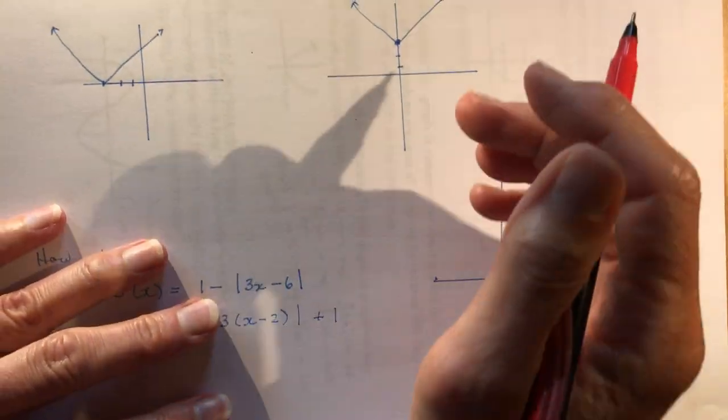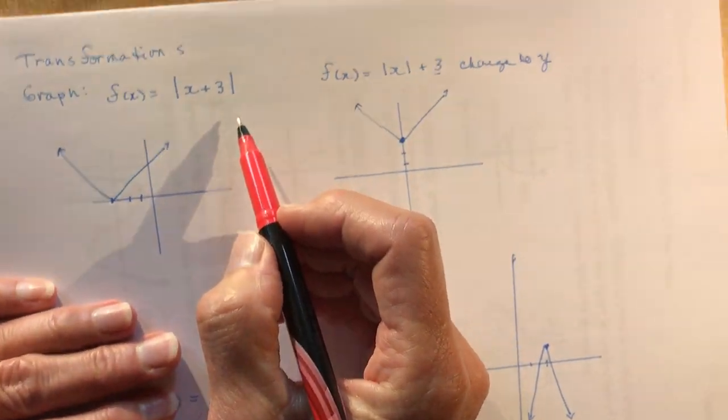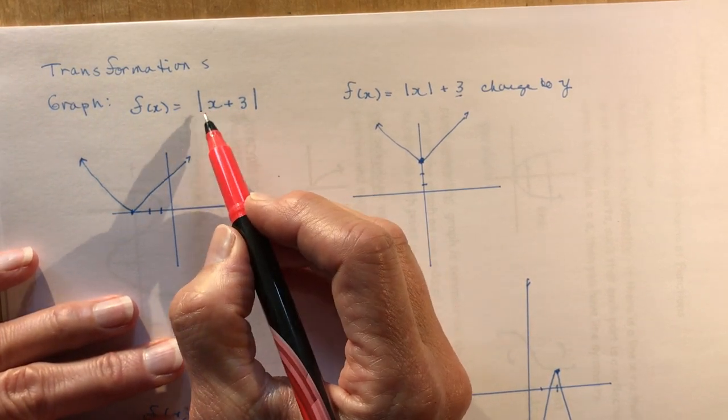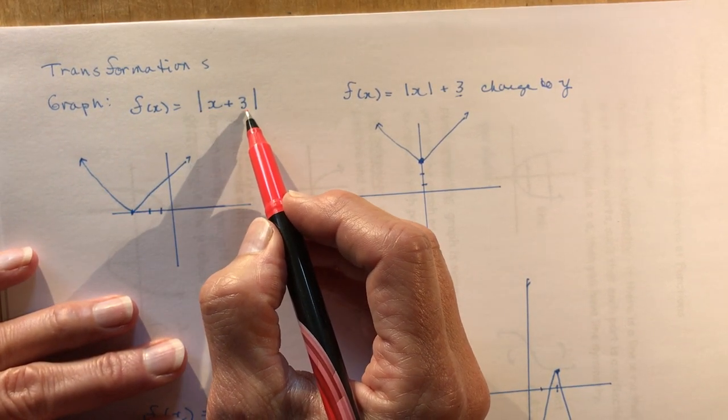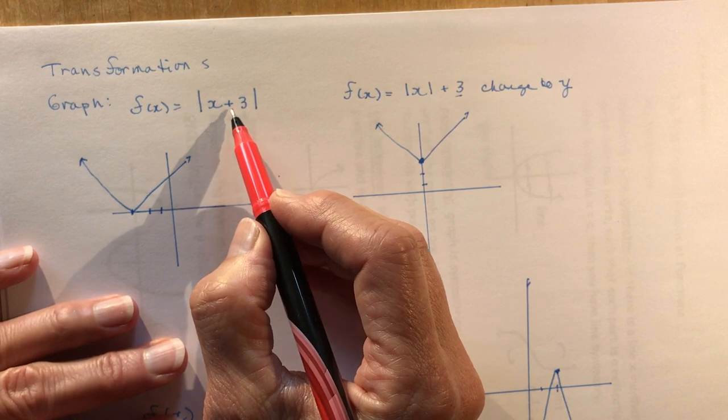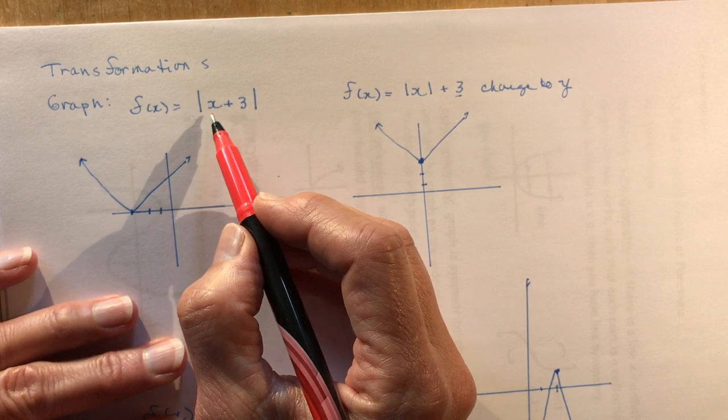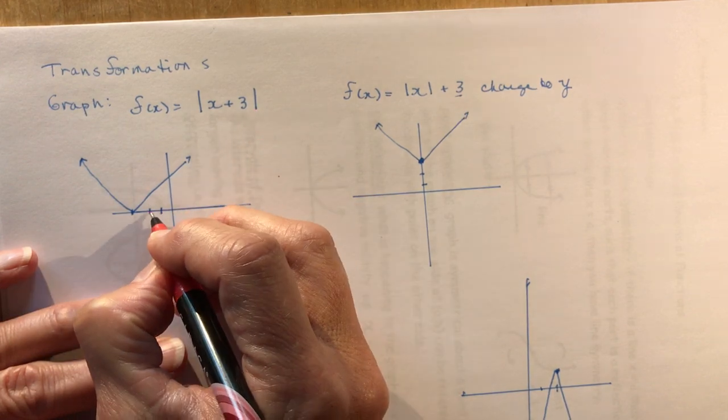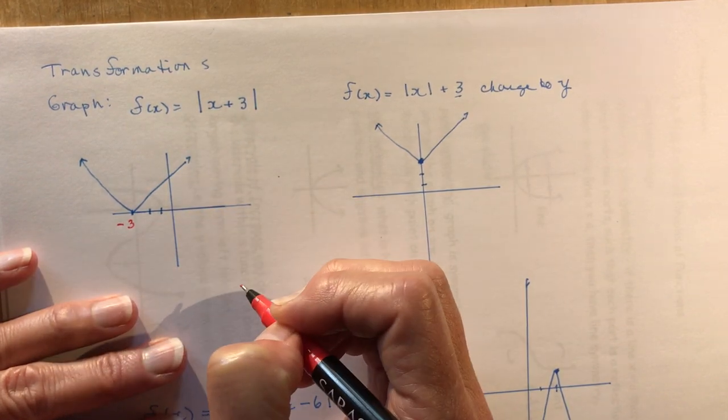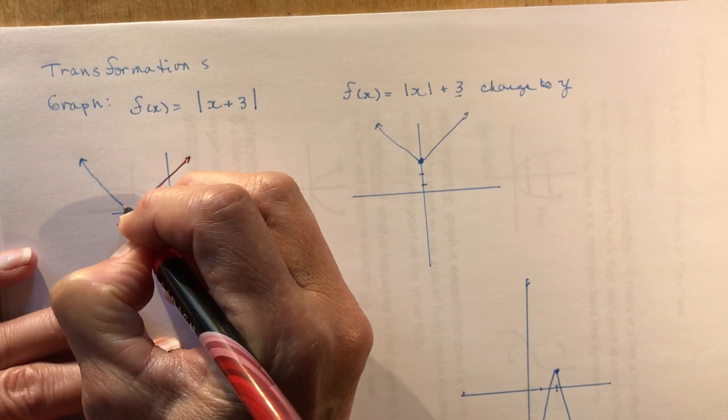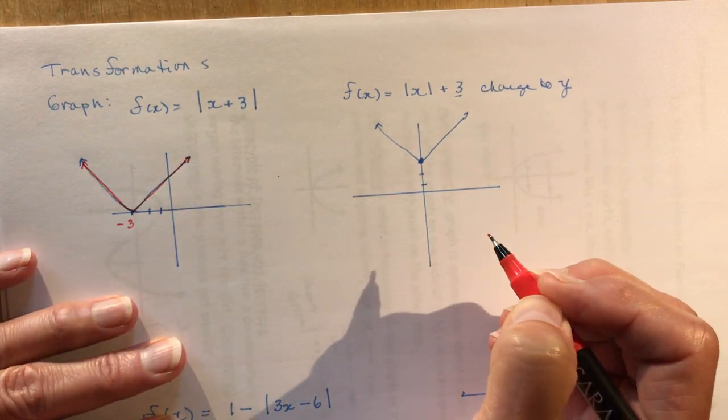Now transformations. If you have a transformation of the absolute value function like this, you should be so aware of these from grade 11 math that you know immediately that this function is shifted to the left three units. So 1, 2, 3, minus 3, and I just draw in my absolute value function headed up at 45 degree angles.